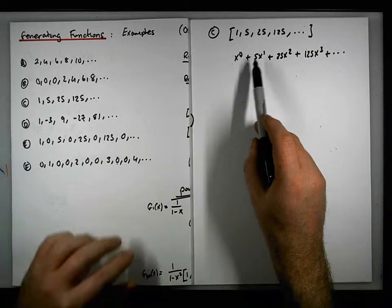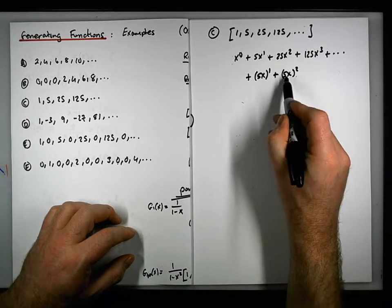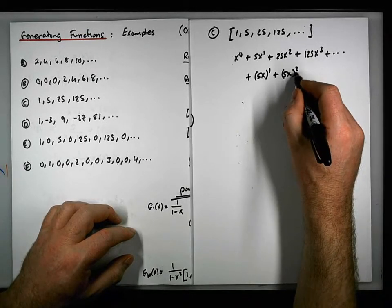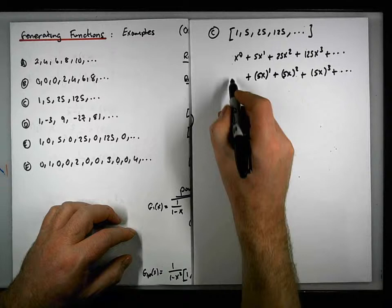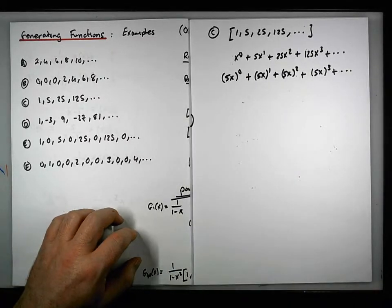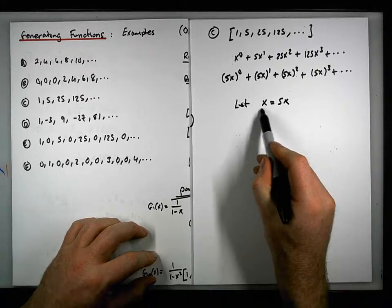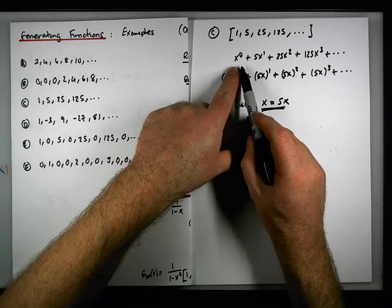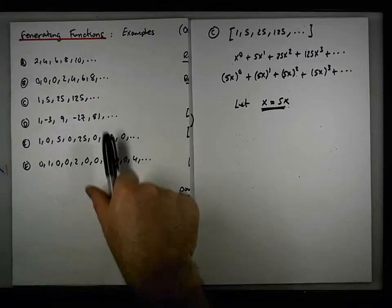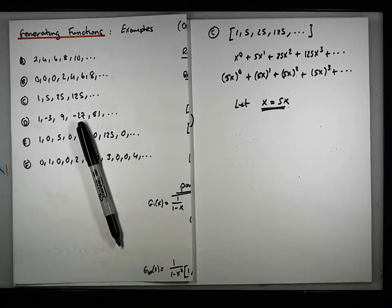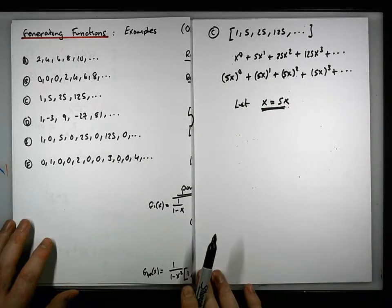Now look at these terms here. This is effectively 5x to the 1. This is effectively 5x squared, because 5 times 5 gives us 25, and x times x gives us x squared. This is effectively 5x cubed. And this here is effectively 5x to the 0. So if we substitute — you can see the substitution now — if we let x equal 5x, what we'll end up with is the power series associated with this particular geometric sequence.